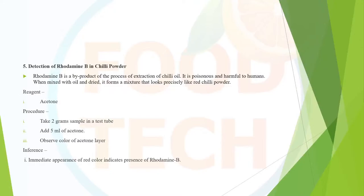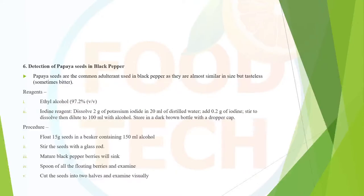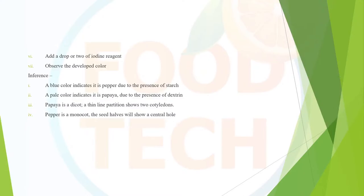Detection of rhodamine B in chili: rhodamine B is a byproduct during extraction of chili oil, used as a colorant. Immediate appearance of red color confirms the presence of rhodamine B. For detection of papaya seeds in black pepper: papaya seeds and black pepper have a similar texture and camouflage each other. Blue color indicates the presence of starch; pale color indicates papaya due to the presence of dextrin.